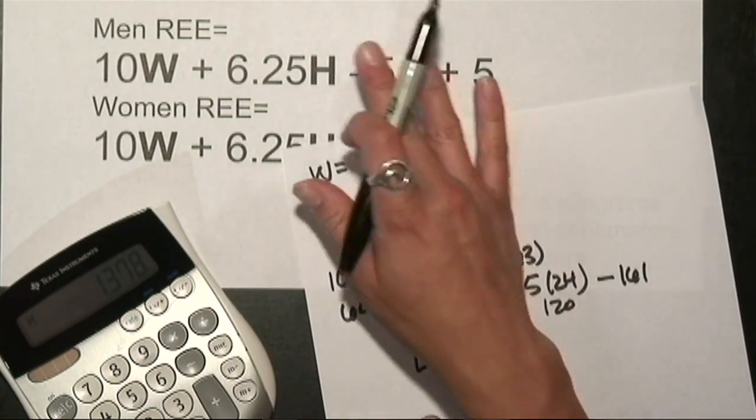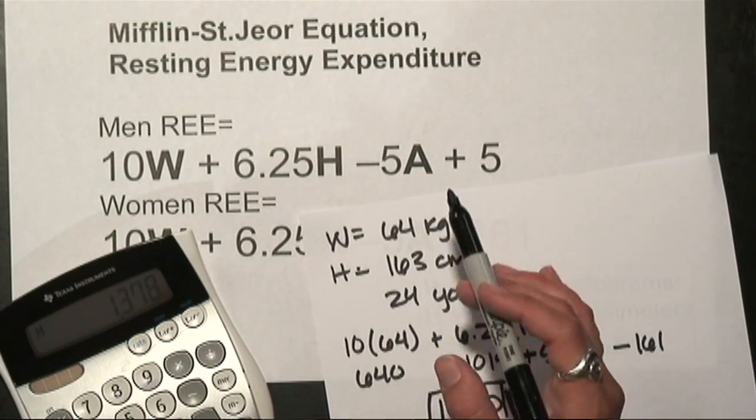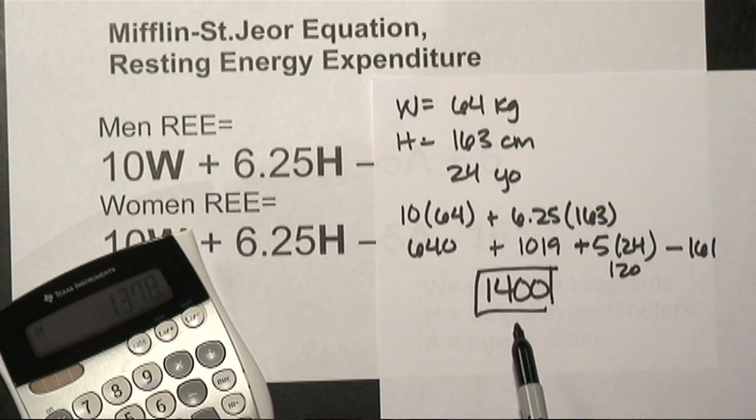Now keep in mind that this is your resting energy expenditure, meaning if you were sitting totally sedentary, my body would burn about 1400 calories.